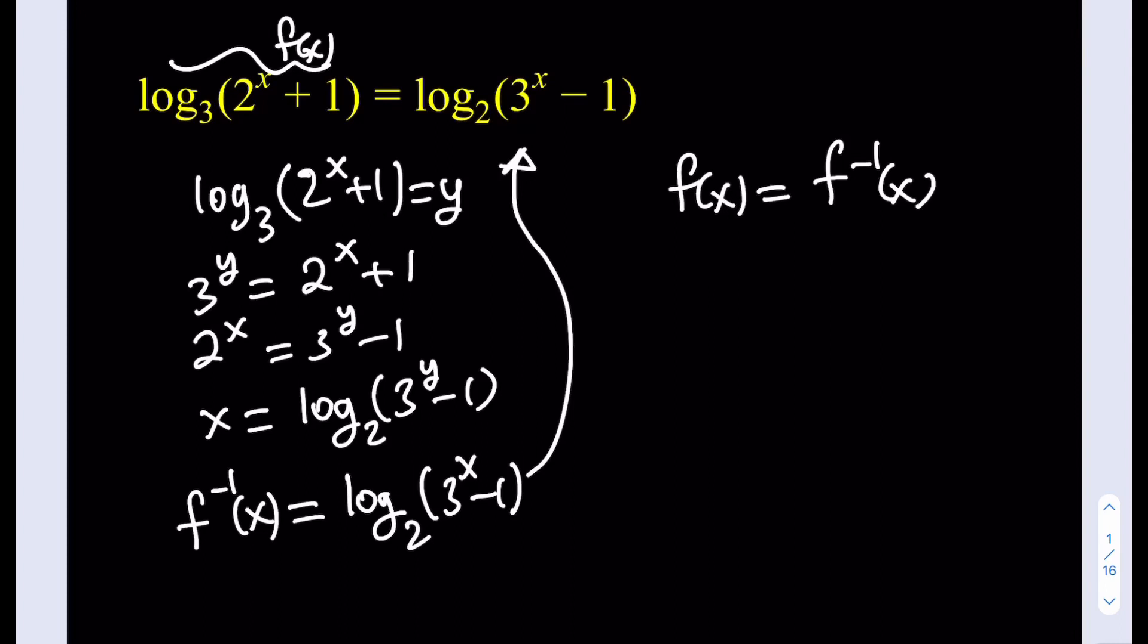So this implies that f(x) is actually equal to f⁻¹(x). But of course, this is at a particular value. This is not in general true. Obviously, you're going to notice that if you plug in some values, it's not always going to work. But for some x values, this is true. That's what we're looking for.